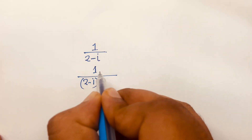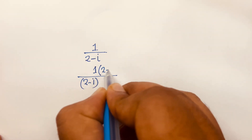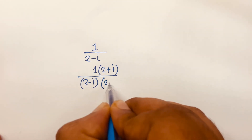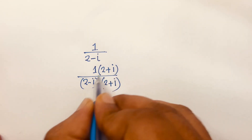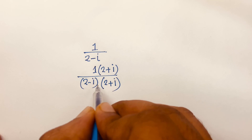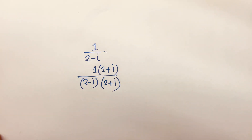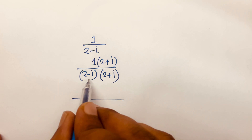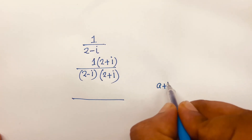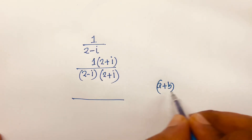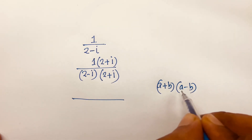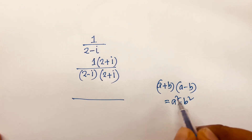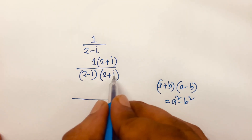First, I multiply by the conjugate: (2 plus i) over (2 plus i). The denominator becomes (2 minus i)(2 plus i), which follows the form (a plus b)(a minus b) equal to a squared minus b squared.